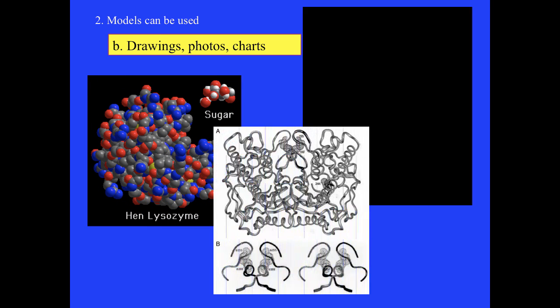We also use drawings, photos, and charts as models. For example, here we have three different representations of the lysozyme enzyme. Although each model is computer generated, it represents a different way to think about the enzyme and its interaction with sugar.